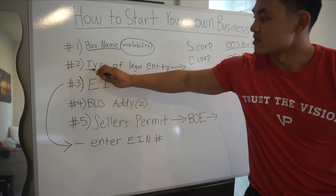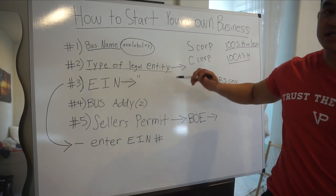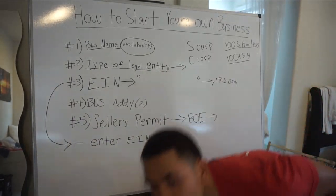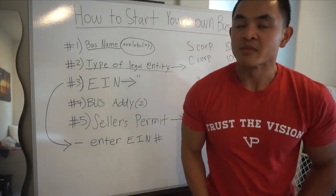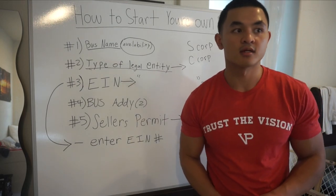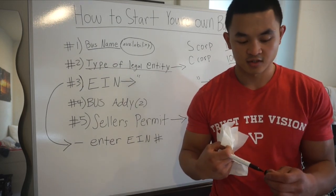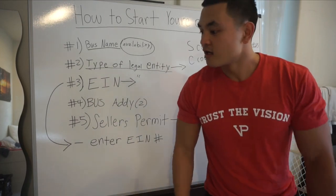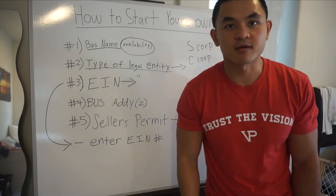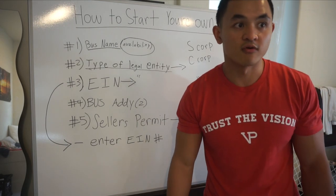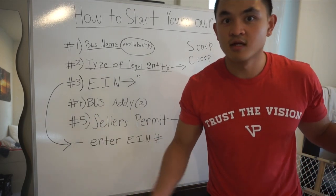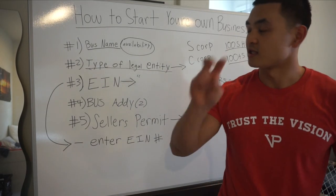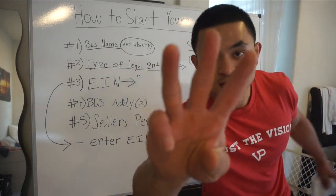So now I've described the types of legal entities. You now have your options — like when you go to a store, you want to see what you're working with before you decide. Those were your options for step two.